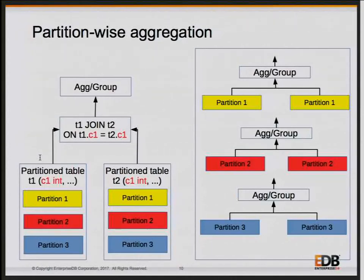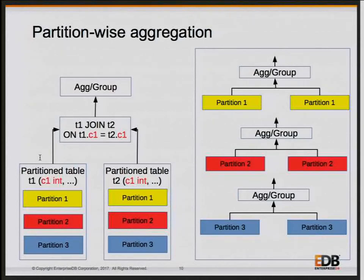When I started working on partition-wise join to see its feasibility, I manually wrote separate queries per partition. That showed about 15% performance improvement. When I implemented partition-wise join properly with the whole partition table join, it showed almost the same performance, except for planning time. So from an application perspective you could do it manually, but the planning overhead matters.